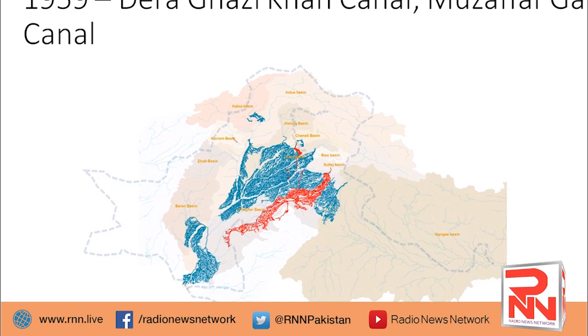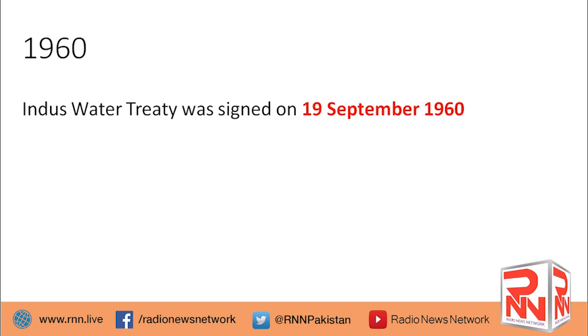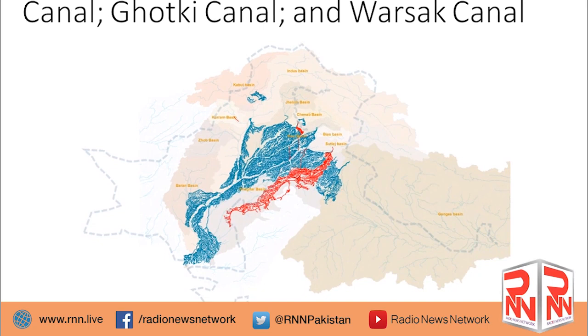In 1959, on the Pakistani side, more canals were built. If you look at the two countries, they were doing one canal project on one side and another on the other side — a continuous parallel buildup. Then in 1960, Pakistan and India signed the Indus Waters Treaty. That was the situation before the treaty, and in 1962 Pakistan built the Guddu Barrage, another big barrage in Sindh.